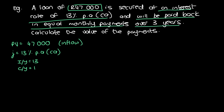The equal monthly payments indicate that PY = 12 (monthly). It's over three years, so N = 3 years. However, our N needs to correspond with our PY — the units of N and PY must match. So N must be multiplied by 12 to give us months, making N = 36 months.